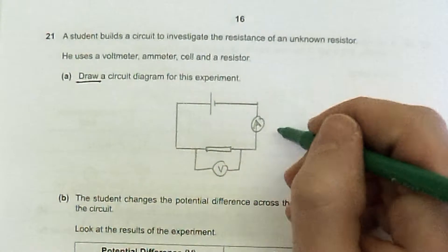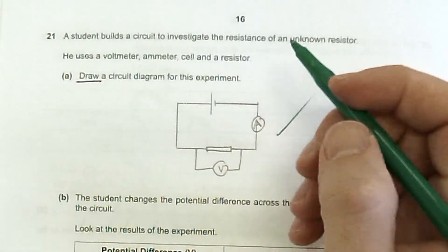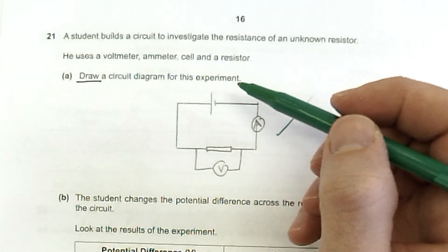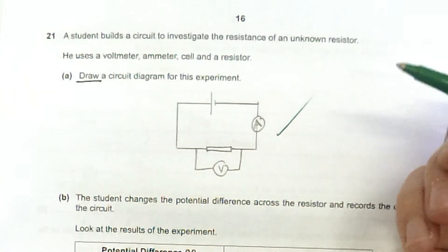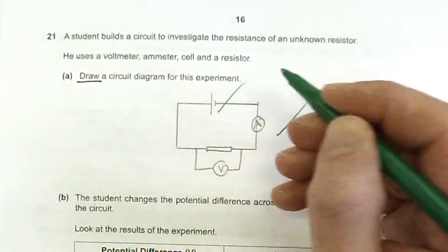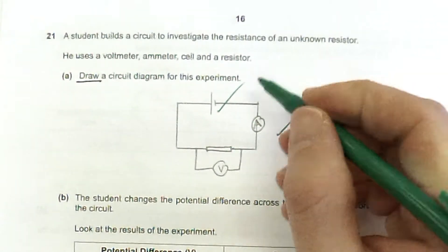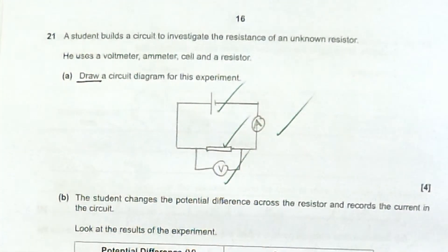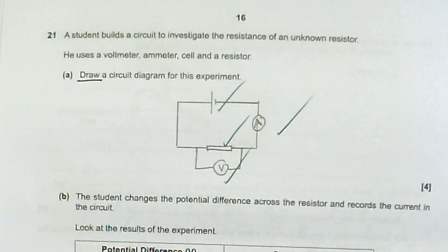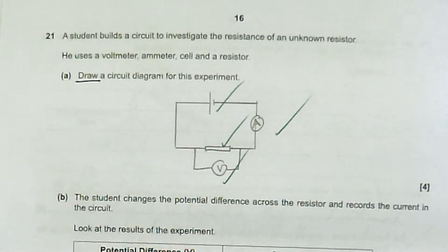I have got a mark for all the symbols being correct. I've got marks for getting the symbols correct. I've got a mark for the cell, the resistor, and the ammeter all being in series. And I've got a mark for the voltmeter being across in parallel with whatever we are measuring.